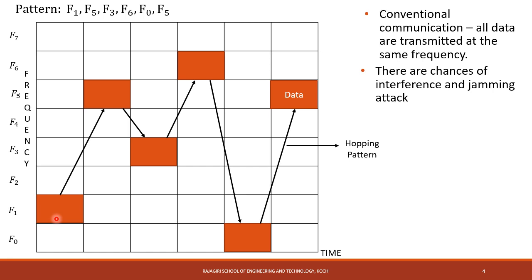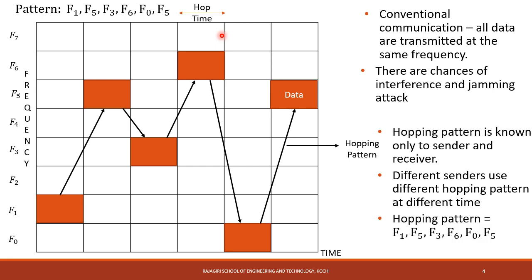This pattern which it follows is called the Hopping Pattern, and the Hop Time is the time it maintains at a particular frequency range. This hopping pattern will be known only to the sender and receiver. Different senders will use different hopping patterns, and the pattern will differ at different times, making it difficult for anyone else to tap the information from the channel. The hopping pattern is controlled using a PN sequence, hence it is called Frequency Hopping Spread Spectrum.